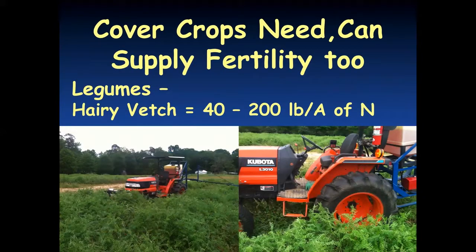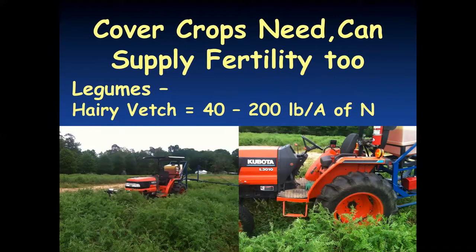With legumes, there's a wide variation in the type you can plant and differences in production. Some of them, like hairy vetch, can provide anywhere from 40 to 200 pounds of nitrogen per acre to the next cash crop. That range depends on how much growth you have — how early it got planted, how good the weather was, how late you wait to kill it — all those variables that enter into it.